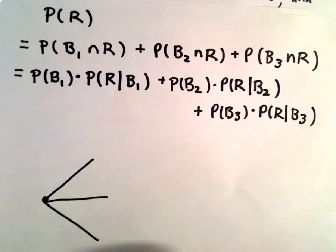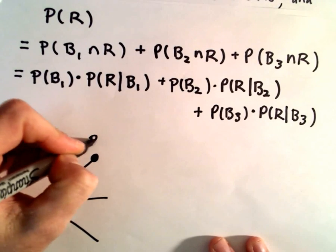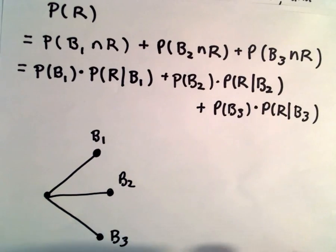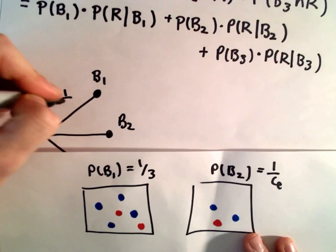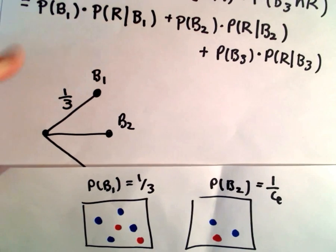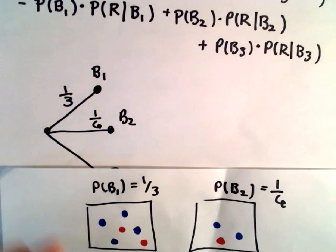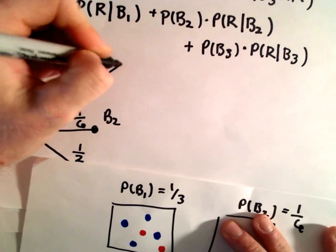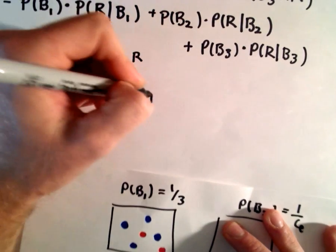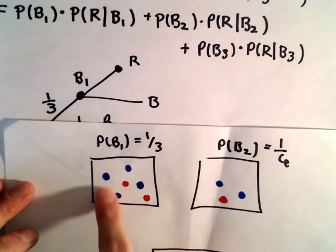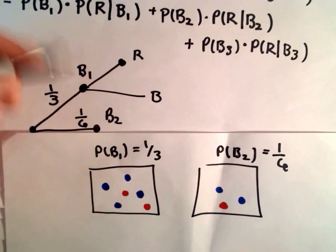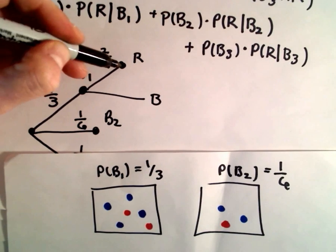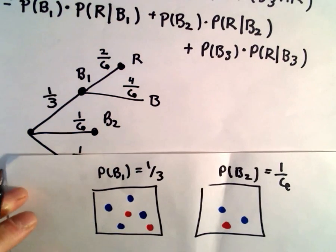I'm going to make a little probability tree. We could select bowl one, bowl two, or bowl three. The probability of selecting bowl one was one-third, bowl two was one-sixth, and bowl three was one-half. If we select bowl one, two things can happen: red or blue. We have six coins total in the first bowl, two of which are red, so there's a two-sixths probability of selecting a red coin and a four-sixths probability of selecting a blue coin.